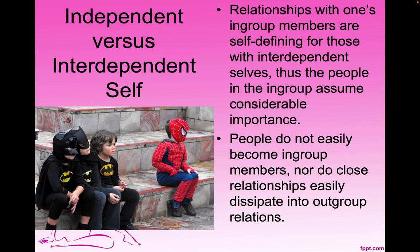Relationships with in-group members are self-defining for those with interdependent selves, so the people in the in-group assume considerable importance. People do not easily become in-group members, nor do close relationships easily dissipate into out-group relations. For example, Spider-Man sitting away from the three Batmen illustrates the in-group/out-group distinction — the Batmen are close to each other as an in-group, while Spider-Man is the out-group.